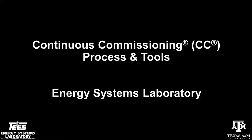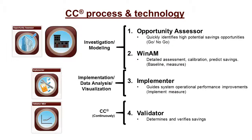The continuous commissioning, or CC, process includes three basic stages. First, we do an investigation. This is followed by an implementation stage. Then, we have ongoing commissioning, or continued CC.